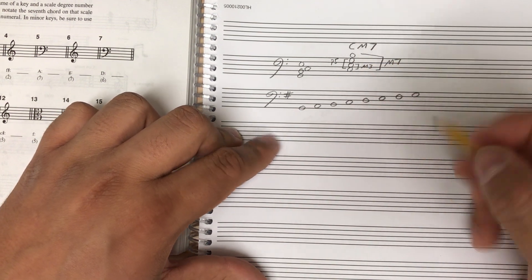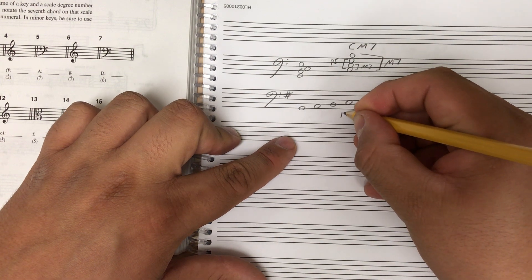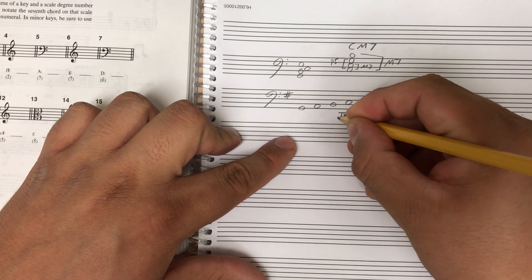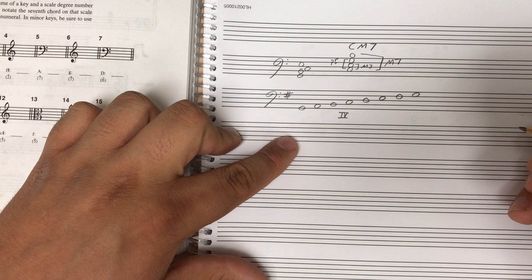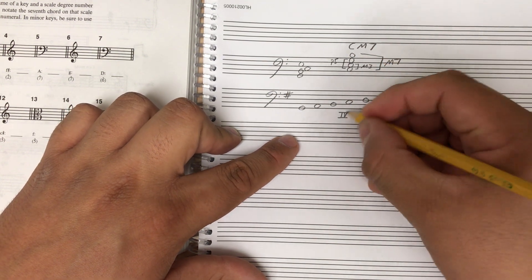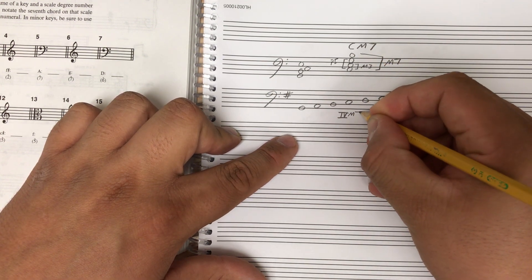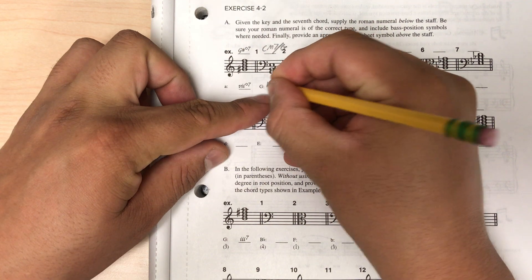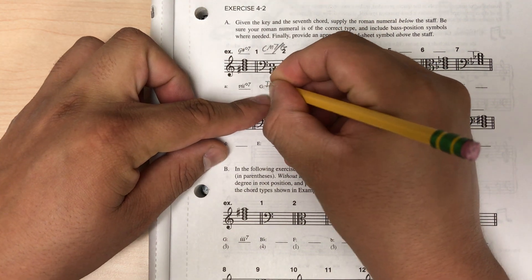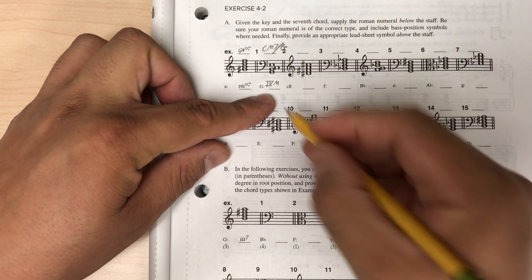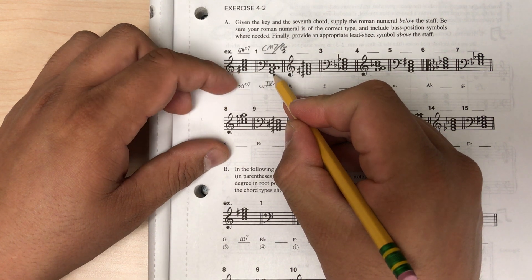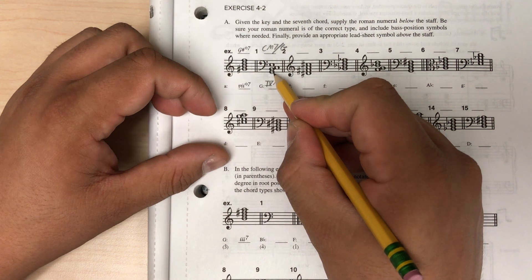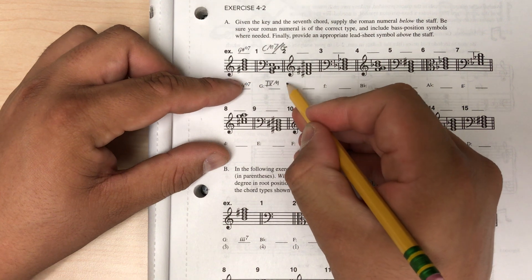Since this is a major seven chord, I'm going to use a capital Roman numeral. So capital IV for four, and then it's a major seven chord. So I would write major seven, but when I copy it over, I will have the four and the major, but because this is not in root position, I have to use the correct base position symbol.